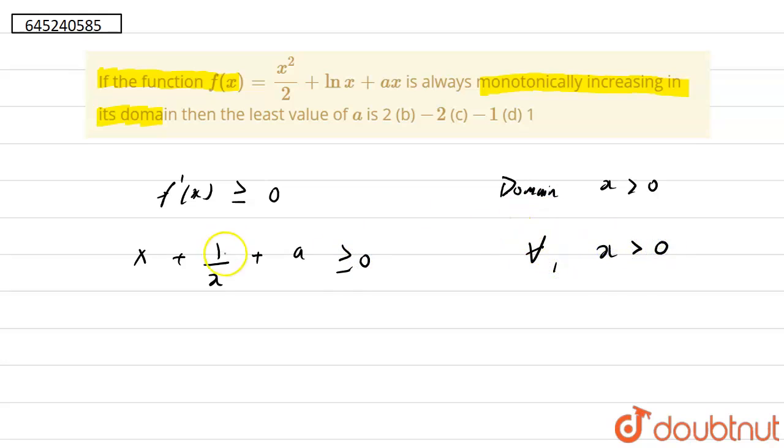for x greater than 0. So now you can see that the differentiation of x squared is 2x, so 2 cancels out by 2, and ln x differentiation is 1 upon x, and ax differentiation is a. So I guess it is clear for you.